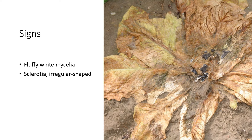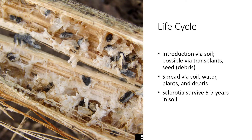The sclerotia represent long-term survival, and this is the part of the life cycle that we absolutely don't want to allow to occur in our fields or high tunnels. In this photo we see timber rot of tomato inside of the stem — you'll see some decay of the stem and sclerotia developing inside that stem.